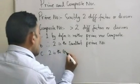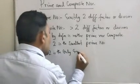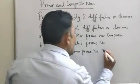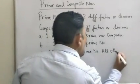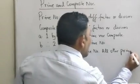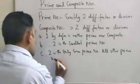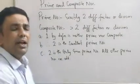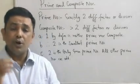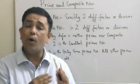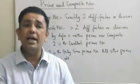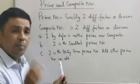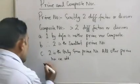And therefore, the third learning is: 2 is the only even prime number. That is the third point which we should be aware of.